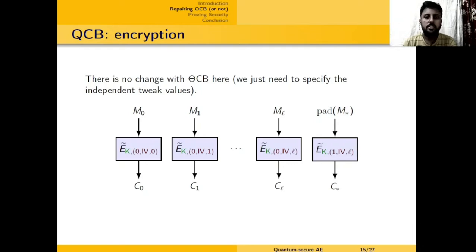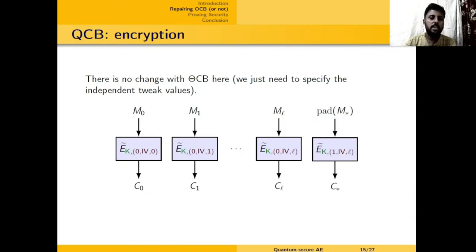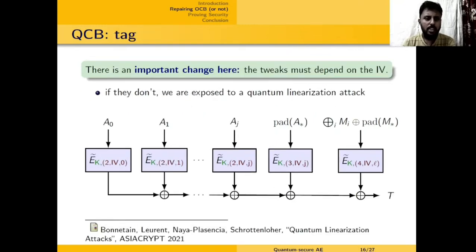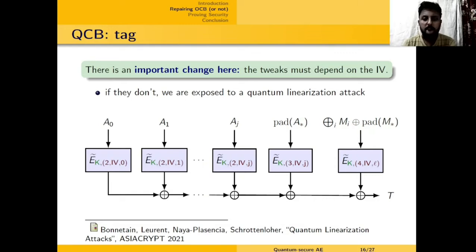We come up with QCB, the construction we propose in this paper. In the encryption part, this is actually similar to theta CB, and we assume that E-tilde is a secure, quantumly secure tweakable block cipher. The encryption part of QCB is essentially the same as theta CB because it is secure enough. But for the tag part there is an important change: in OCB3, the IVs are not used when processing the associated data for the tag, as offsets there are not IV-dependent. In QCB, we require the IVs to go into the tweaks when processing the associated data.